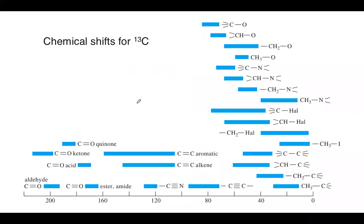Carbon-13 chemical shifts are obtained similarly to proton NMR chemical shifts — based on the difference between the Larmor frequency of the observed peak and the Larmor frequency of the reference. Carbon-carbon single bonds are generally well shielded. Carbon-carbon double and triple bonds fall in the middle of the region around 80–120 ppm. Carbon double bond to oxygen — aldehydes, ketones, acids, ethers — are all very deshielded, appearing far upfield around 160–220 ppm.